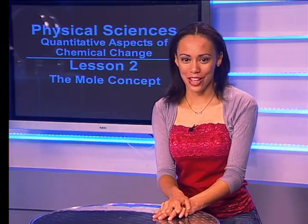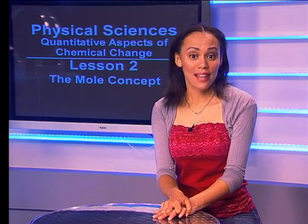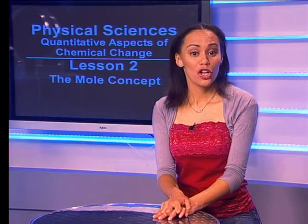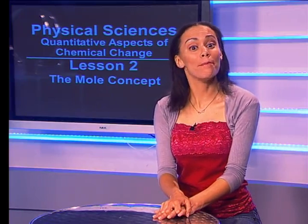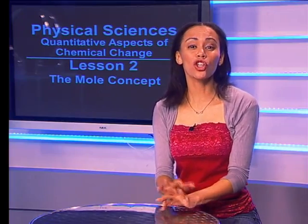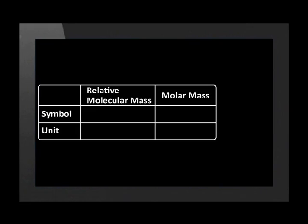However, don't confuse the two things. Relative molecular mass is the mass of one molecule, so it is an extremely small mass. Molar mass is the mass of one mole of molecules, which is a huge number of molecules. The symbol for relative molecular mass is capital M subscript R, and the symbol for molar mass is capital M. Relative molecular mass has no unit, while the unit for molar mass is grams per mole.